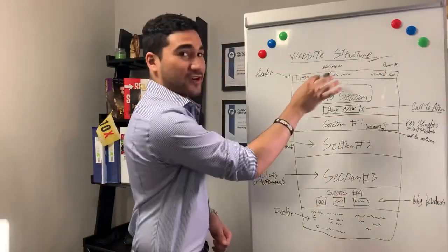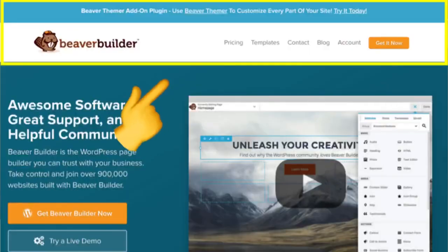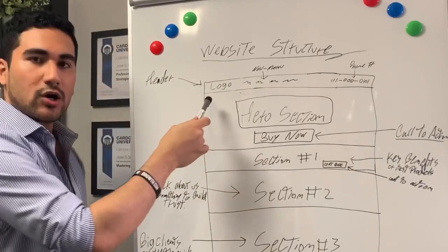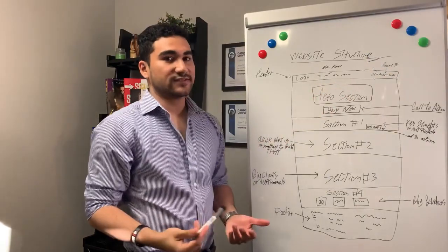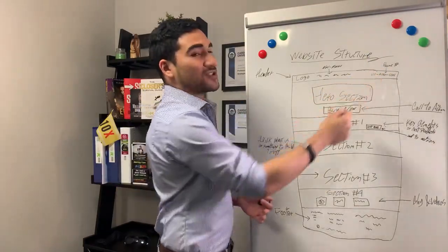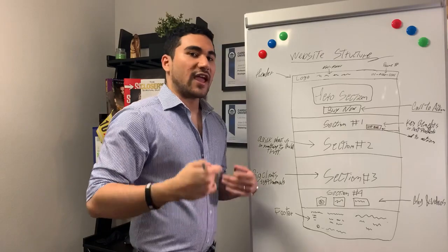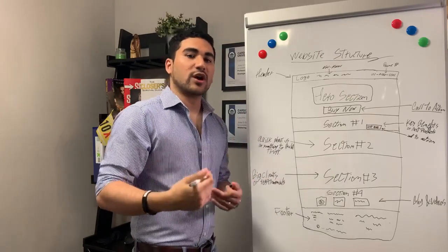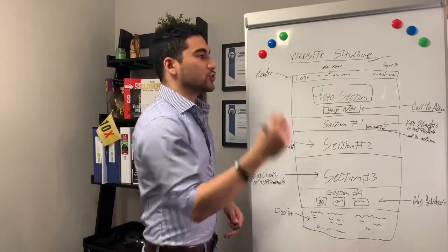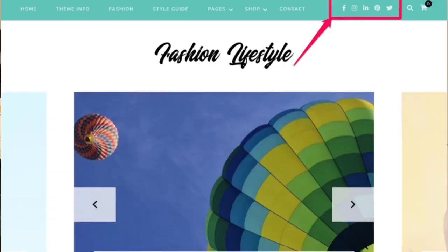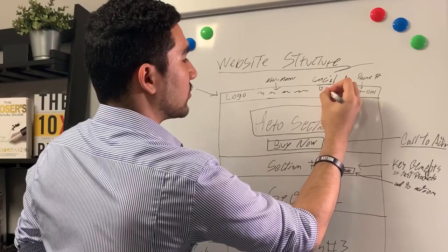We first start with the header. What is the header? The header is the top part of the website, where the navigation menu, the logo, and the phone number reside. The phone number is critical to have so your customers can contact you and ask you any questions they have, any concerns about the product and services you provide.